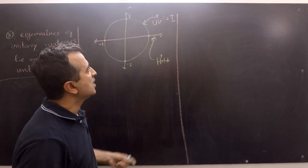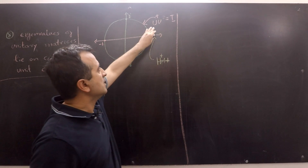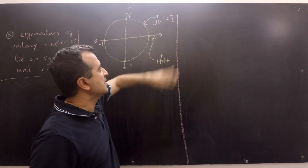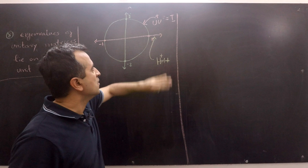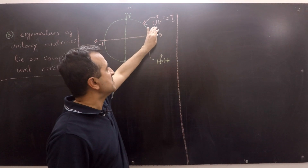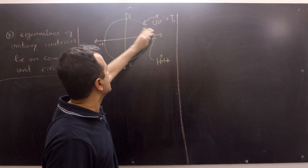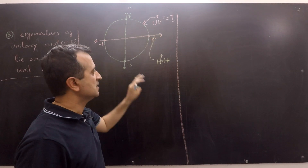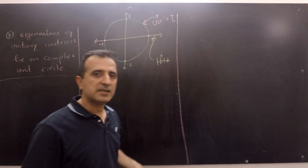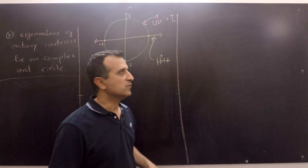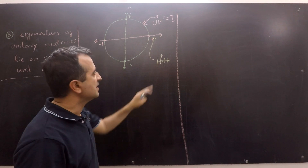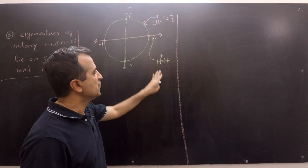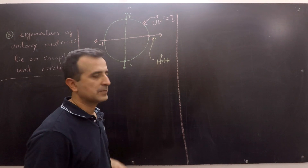In this video, I will prove that eigenvalues of unitary matrices lie on the boundary of the complex unit circle. In the next video, I will prove that eigenvalues of Hermitian matrices are real.